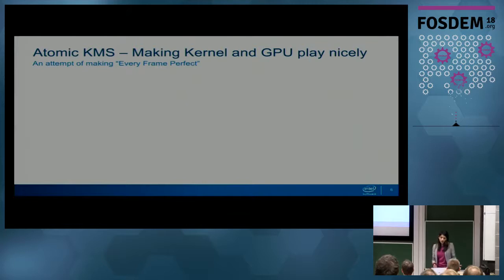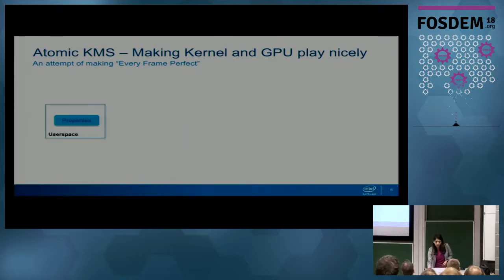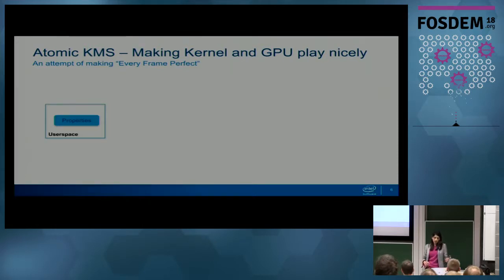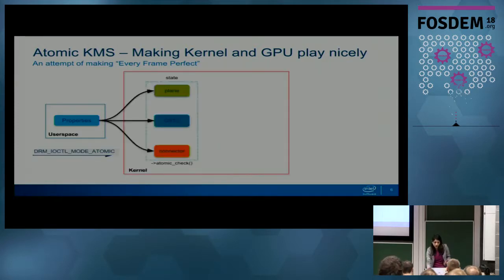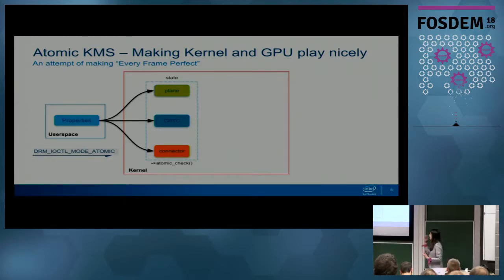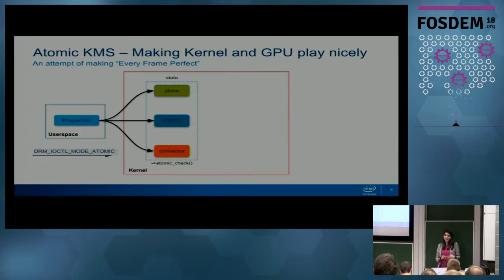Going back to the basics - what was the existing state of atomic kernel mode setting? What does it do when you connect a DisplayPort cable? The user space forms a list of parameters and properties and sends that to the kernel. The first step the kernel does is form the state of the device - the state for different DRM mode objects depending on the requested mode. This is the atomic check phase, where it validates the requested mode.